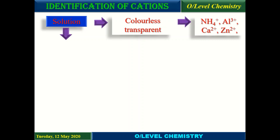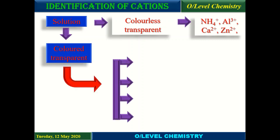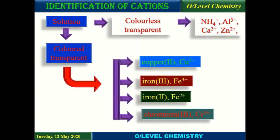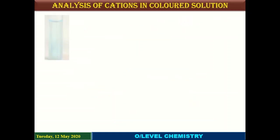On the other hand, if we are provided a colored transparent solution, it may include copper 2 ions, iron 3 ions, iron 2 ions, and chromium 3 ions. This is a comparatively easy method because the color of the solution itself shows the presence of certain ions.